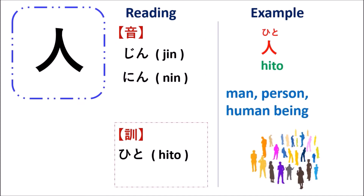Next, we will learn about the kun'yomi reading. The word is hito, which means 'man,' 'person,' 'people,' or 'human being.' Please remember this word — when you want to say 'people' or 'person,' you can say hito.